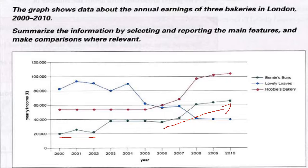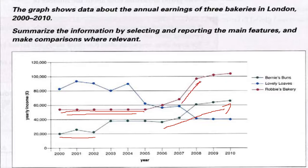The second detail would be of Robbie's Bakery. Its trend was similar, but there was no change in income for the first five years, and then a dramatic increase to £100,000 until 2008, and then a slow rise to £105,000 in the last given year.